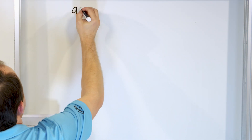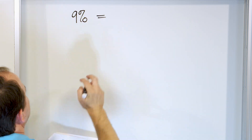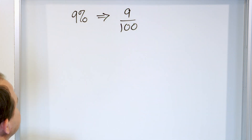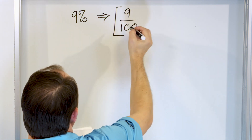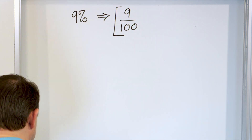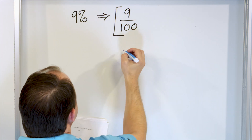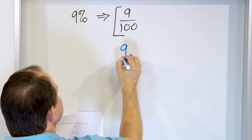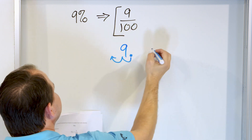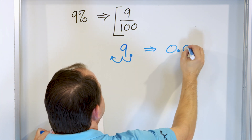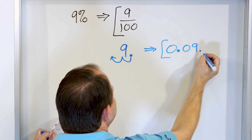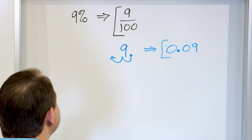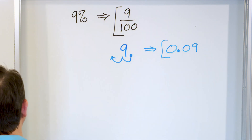Let's look at 9%. As a fraction: 9 out of 100. We can't simplify it, so the fraction is 9 over 100. For the decimal: take the 9 with its decimal point at the end and move it two spots to the left — we insert a zero, making it 0.09. So 0.09 is the decimal equivalent and 9 over 100 is the fraction equivalent of 9%.